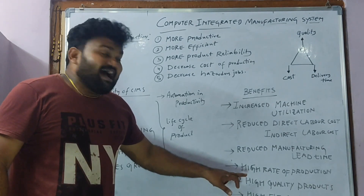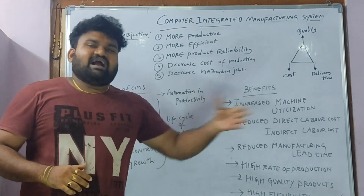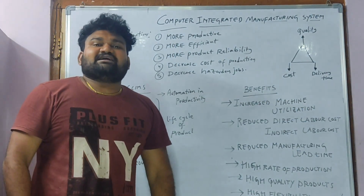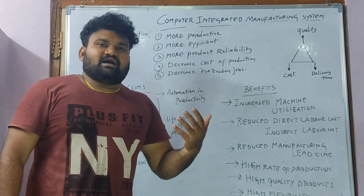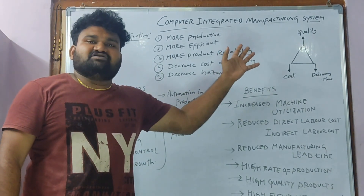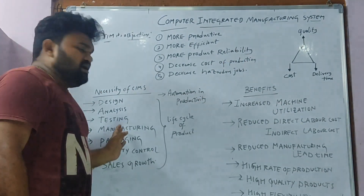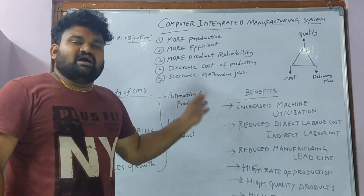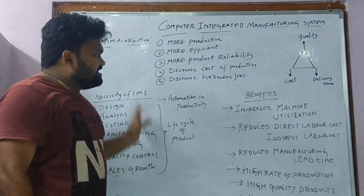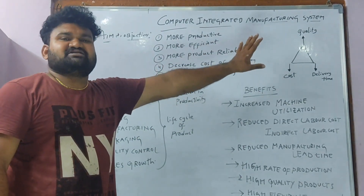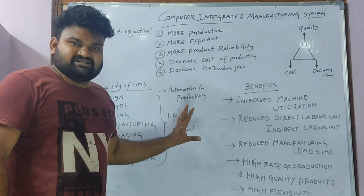High rate of production, high quality products, and high flexibility. Our systems are flexible — it is a highly flexible system which is called Computer Integrated Manufacturing System. There is high necessity to increase automation of particular products, machines, or material handling systems. This is the importance, benefits, aims, objectives, and necessity of CIMS.